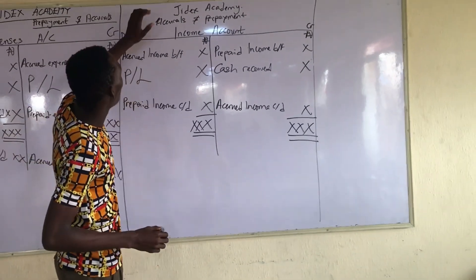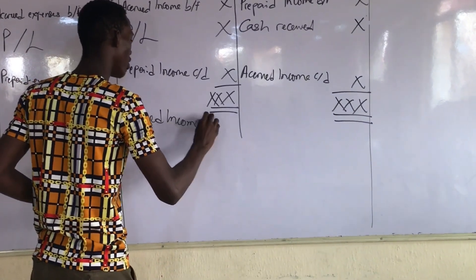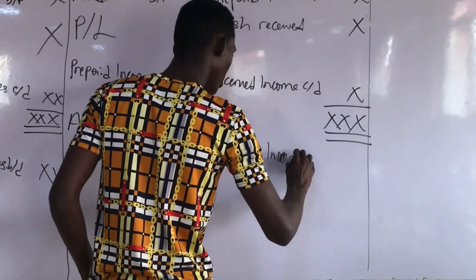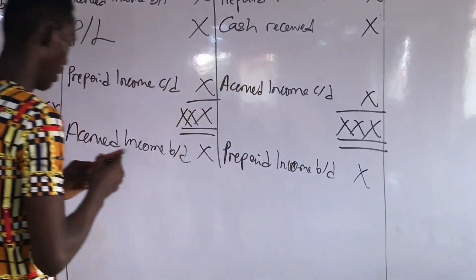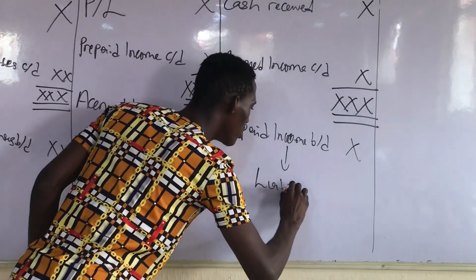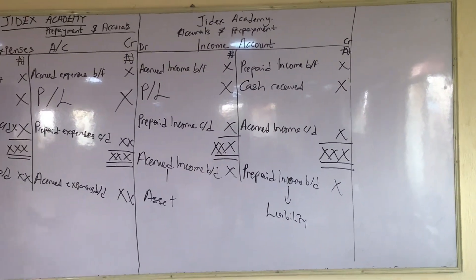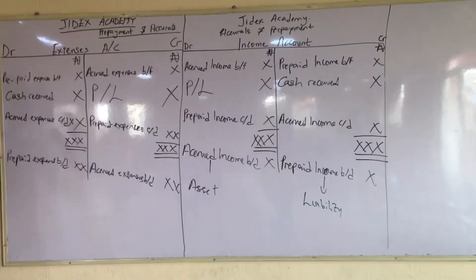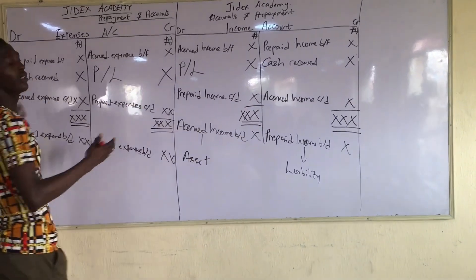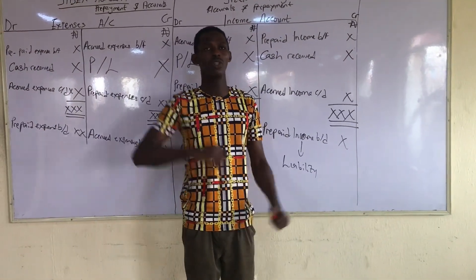Then you bring the balances down: accrued income brought down is an asset, and prepaid income brought down is a liability. Remember, asset items will be on the debit side and liability items on the credit side — the same principle applies to prepaid expenses and accrued expenses. That's all for today. Thank you, please like and subscribe, and see you in our next class.